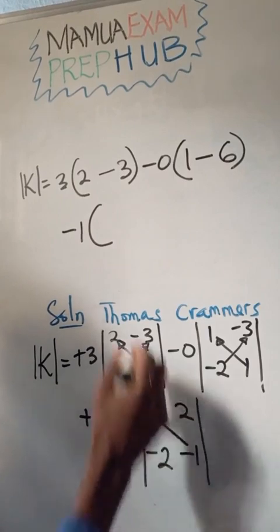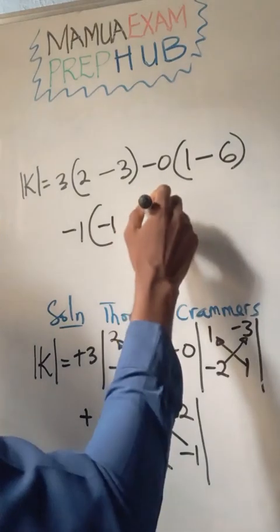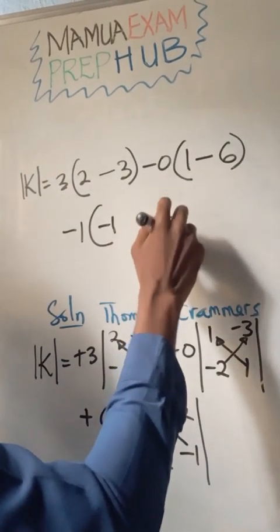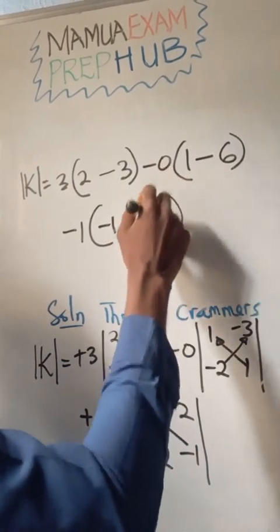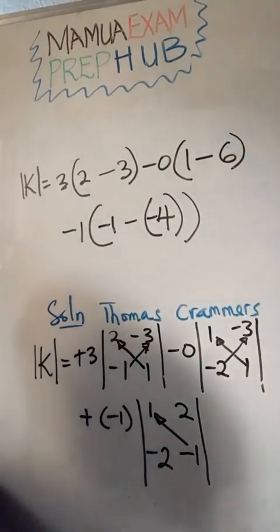I'm going to multiply diagonally, which is minus 1 times 1 is minus 1, minus 2 times 2 is minus 4. Then I'm going to subtract.